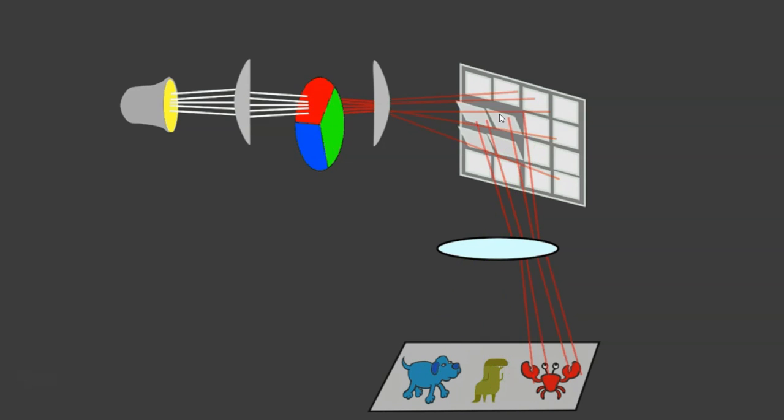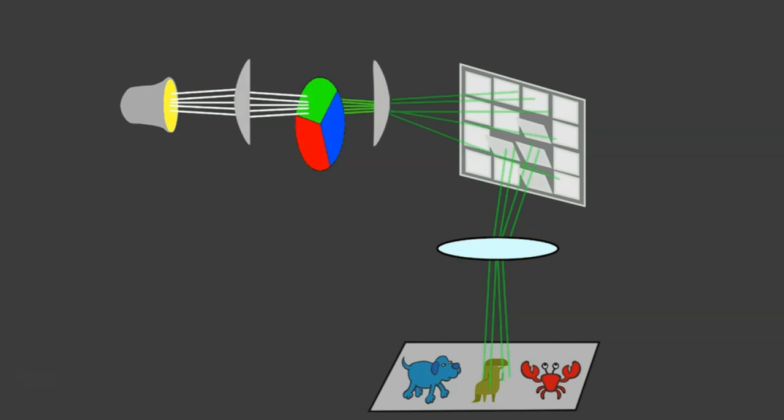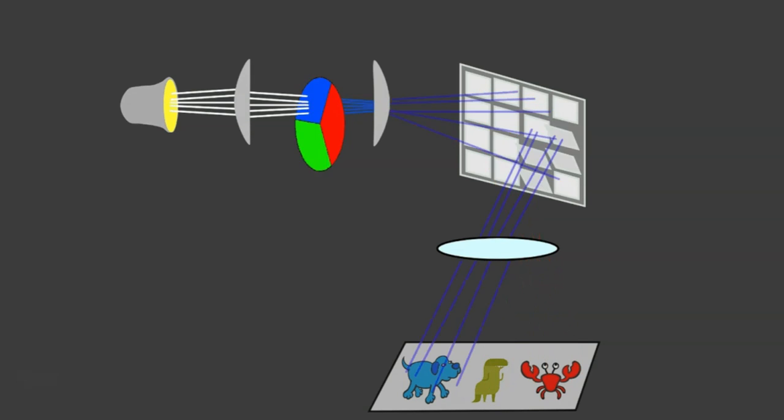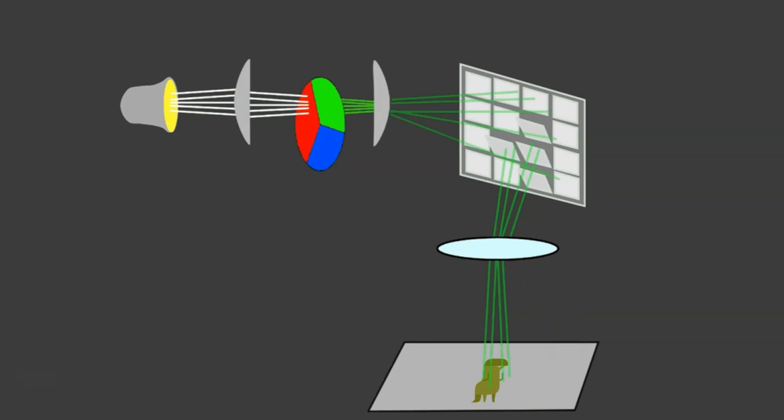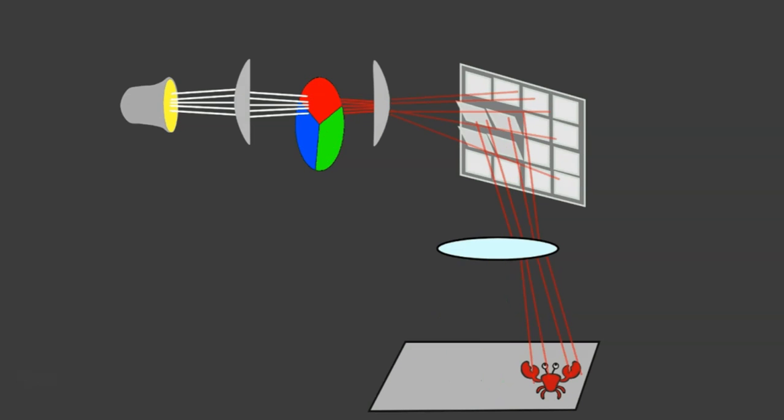That allows you, depending on whether the mirror is tilted or not, to draw an image on the screen.